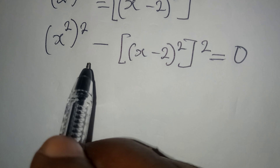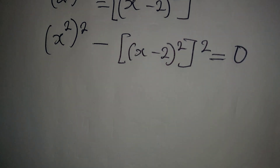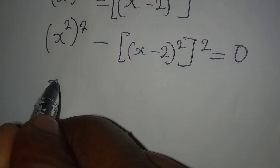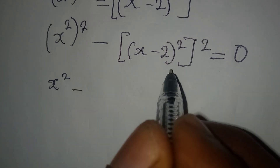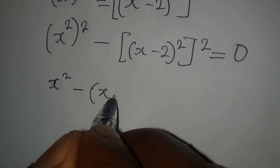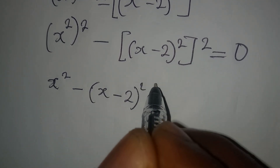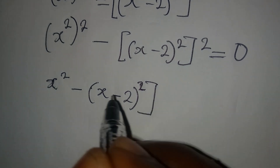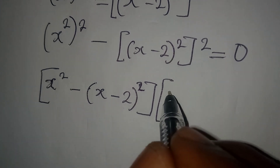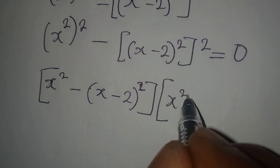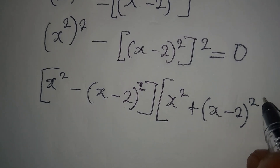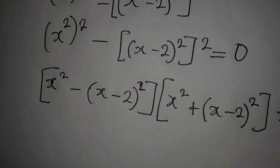From here we can apply the difference of two squares. So we will have x squared minus open bracket x minus 2 squared — this is what we will have in the first bracket. And in the second bracket it is going to be addition: x squared plus open bracket x minus 2 squared. And this is now equal to 0.